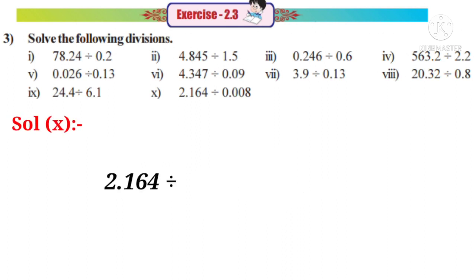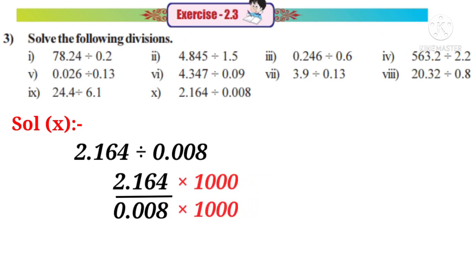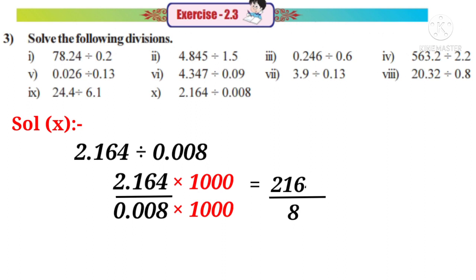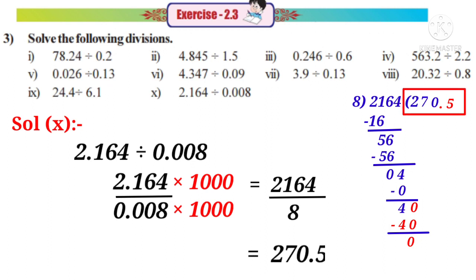Solution 10: 2.164 divided by 0.008, that means 2.164 by 0.008. Observe that there are three decimal places in the denominator. So we have to multiply with a number which has three zeros after 1, that is by 1000. On multiplication, the decimal point will shift right side after three digits. So the numerator becomes 2,164 by denominator becomes 8. Dividing: 8 into 21 gives 2 remainder 5; bring down 6, 8 sevens are 56, remainder 0; bring down 4, remainder 4; put a decimal point and add zero, 8 fives are 40, remainder 0. The quotient is 270.5.